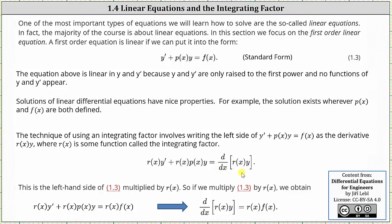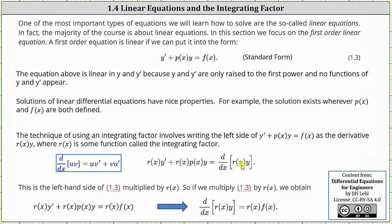Let's check this derivative by applying the product rule. We would have the first function r of x times the derivative of the second function, which gives us y prime, and then plus the second function y times the derivative of the first function, which must be equal to r of x times p of x. This is important for later when we derive the integrating factor.